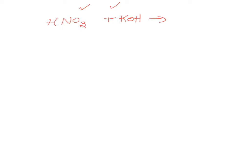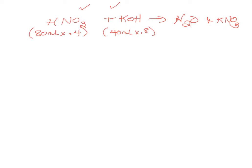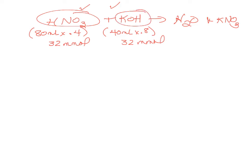A disturbed buffer problem works very similarly to a titration. Products are water and the salt. Since it's a chemical reaction, calculate the mole change. There are 80 milliliters of nitric acid at 0.4 molar, and 40 milliliters of KOH at 0.8 molar. You have 32 millimoles of the original acid and 32 millimoles of potassium hydroxide — this is the equivalence point.